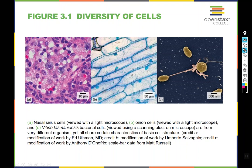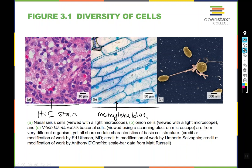Here we have three examples of not only different cell types and different tissues, but also different microscopy techniques. Over here in A, we've got nasal sinus cells — a section of human nasal cavity tissue. In B, we have onion cells. These are both light microscope images, but this one has a stain called an H&E stain, which is why it looks pink and purple, because hematoxylin and eosin give you that pink and purple color. The onion cells are blue because they have been stained with a different compound, methylene blue. Cells can look different due to their shape and structure, and you can also choose different stains for them.